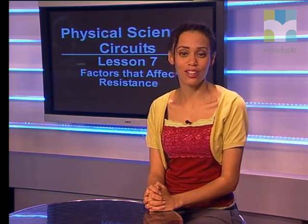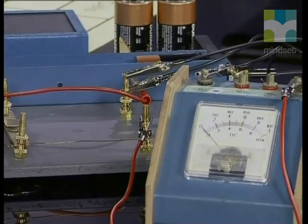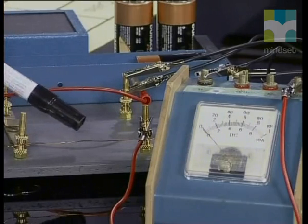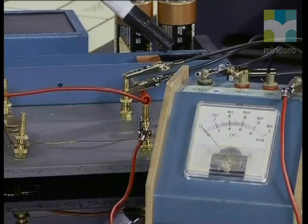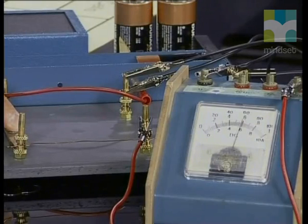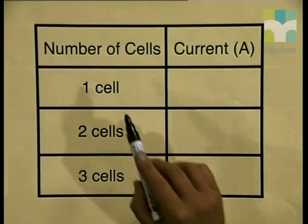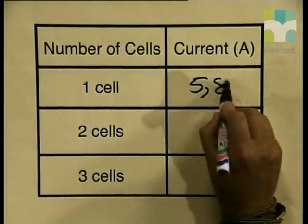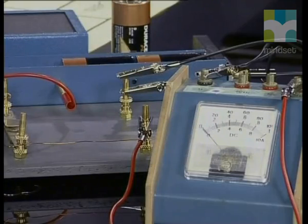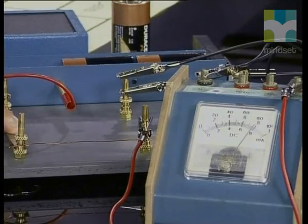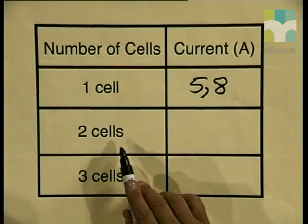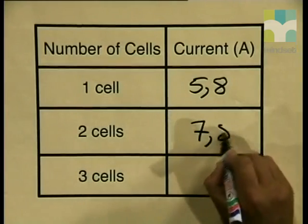Let's join Bruce as he performs another experiment to investigate what else affects resistance in a circuit. Does the thickness of the wire affect the results? I am now going to repeat the experiment, but instead of using thin copper wire I have placed a much thicker piece of copper wire. Starting with one cell and closing the switch, the current reading is around about 5.8 amperes. With two cells in series, closing the switch, we have a reading of approximately 7.8 amperes.